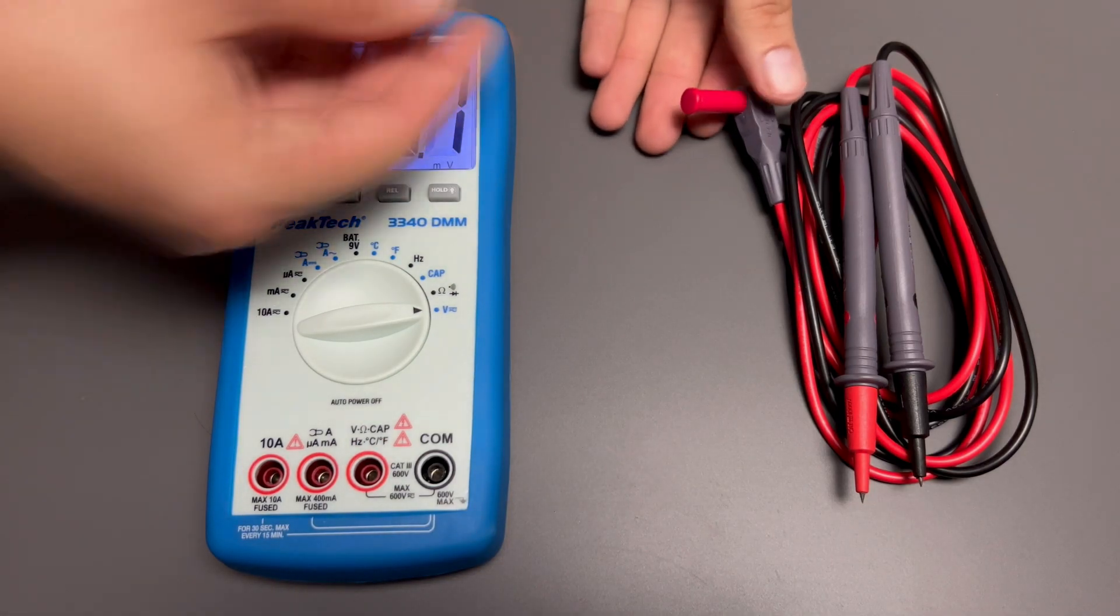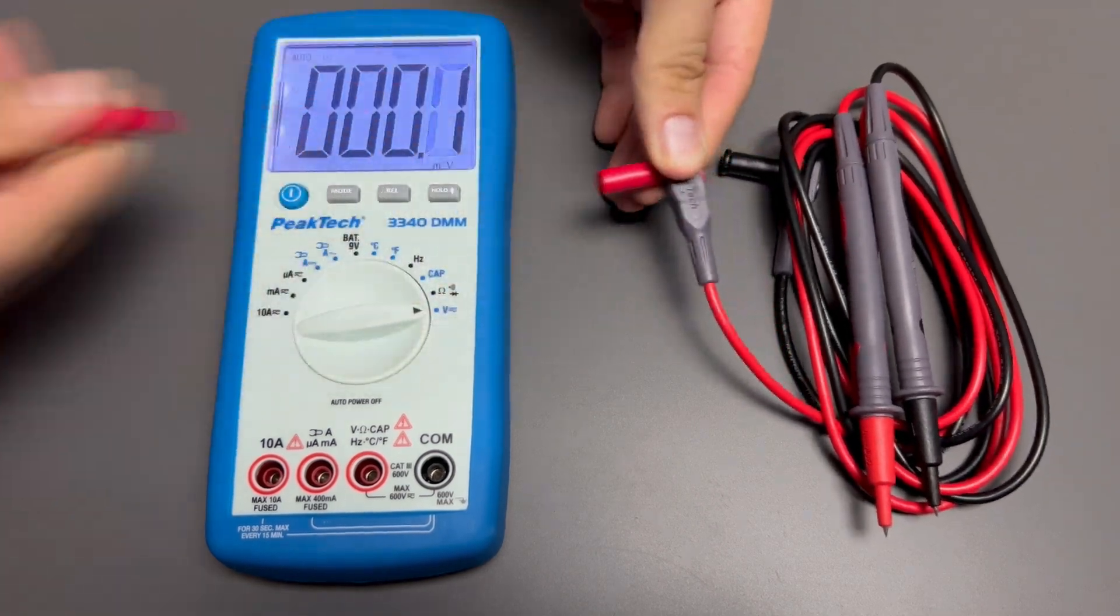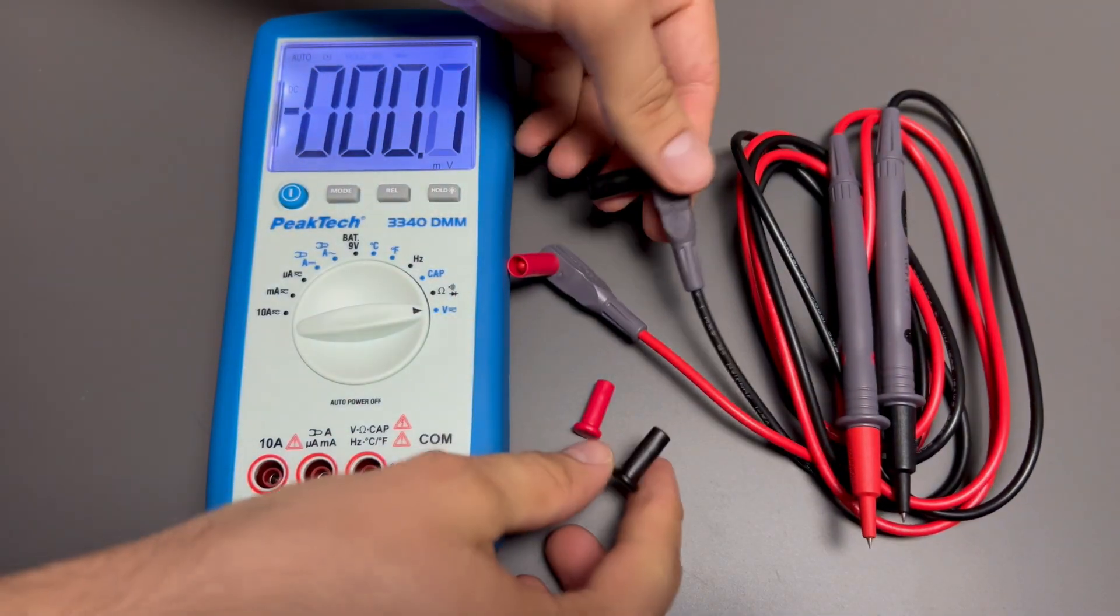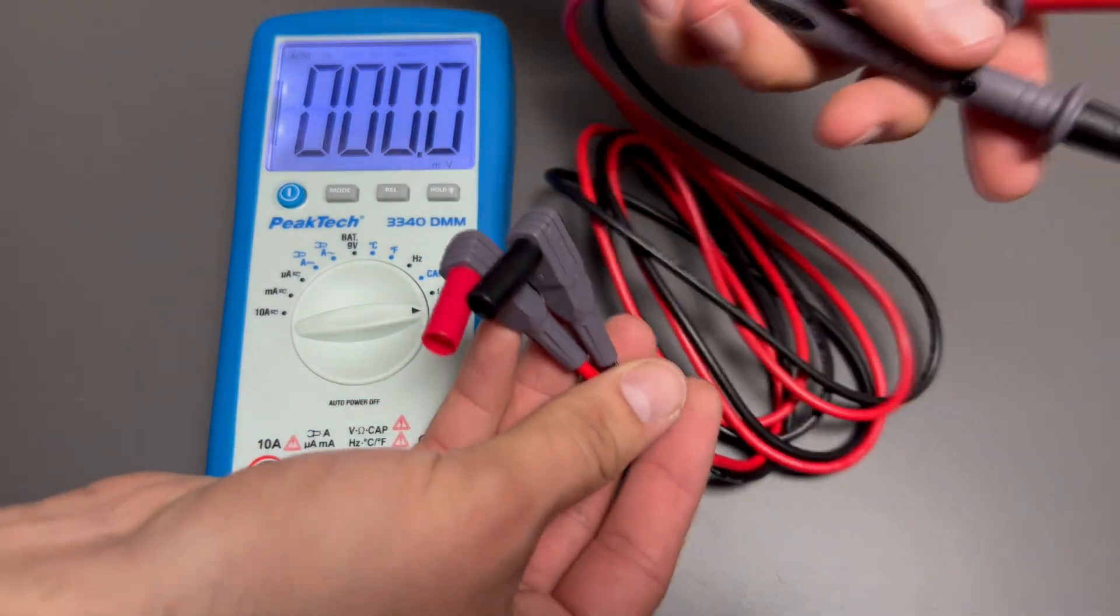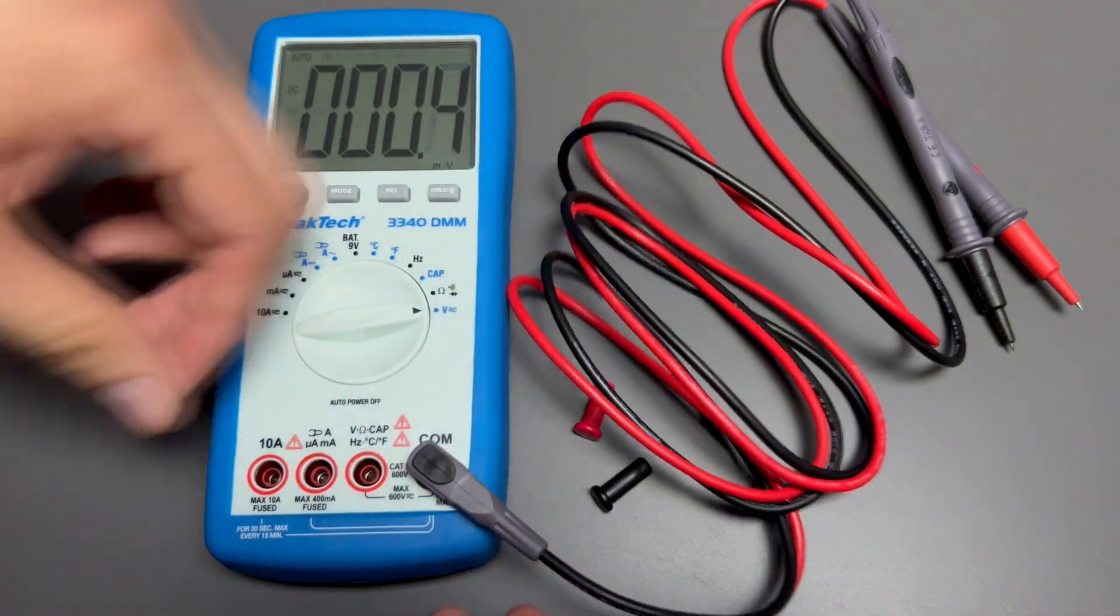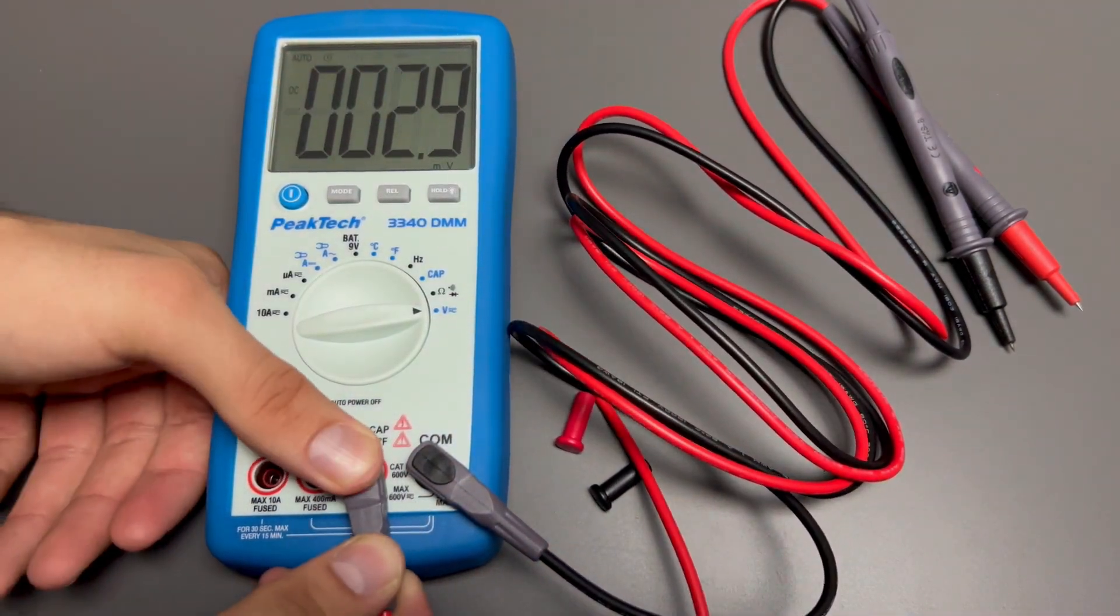Warning: to avoid possible electric shock, instrument or equipment damage, do not attempt to take any voltage measurements if the voltage is above 600 volt DC or AC. Insert the black and red test leads into the COM and VOLT Omega.